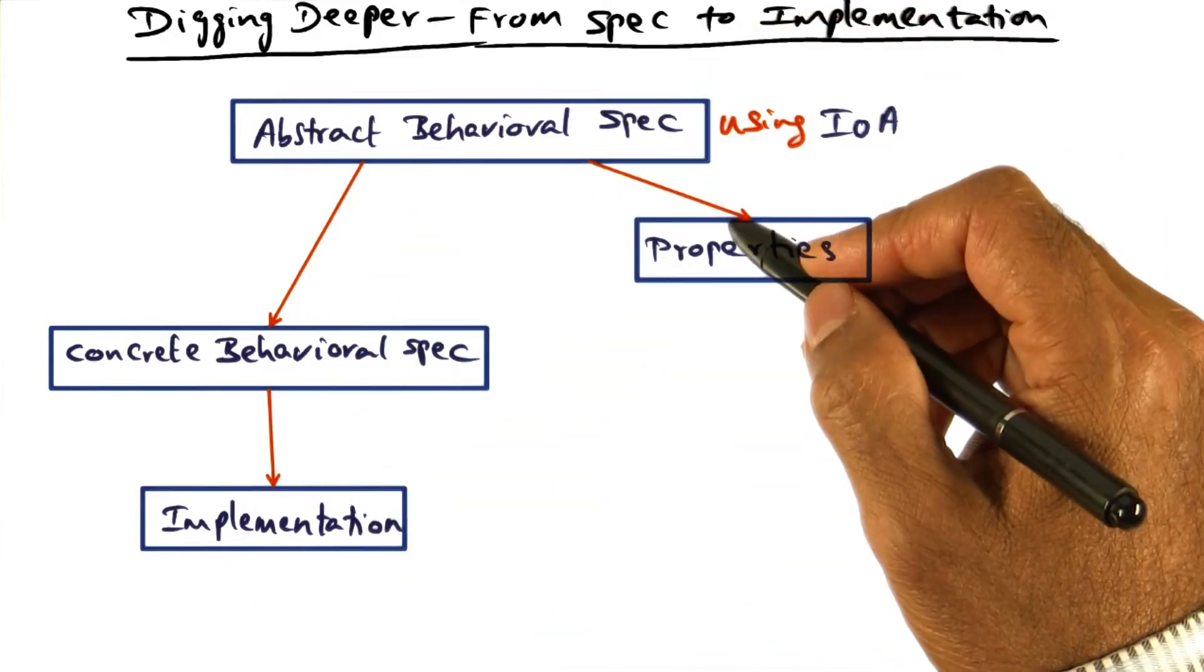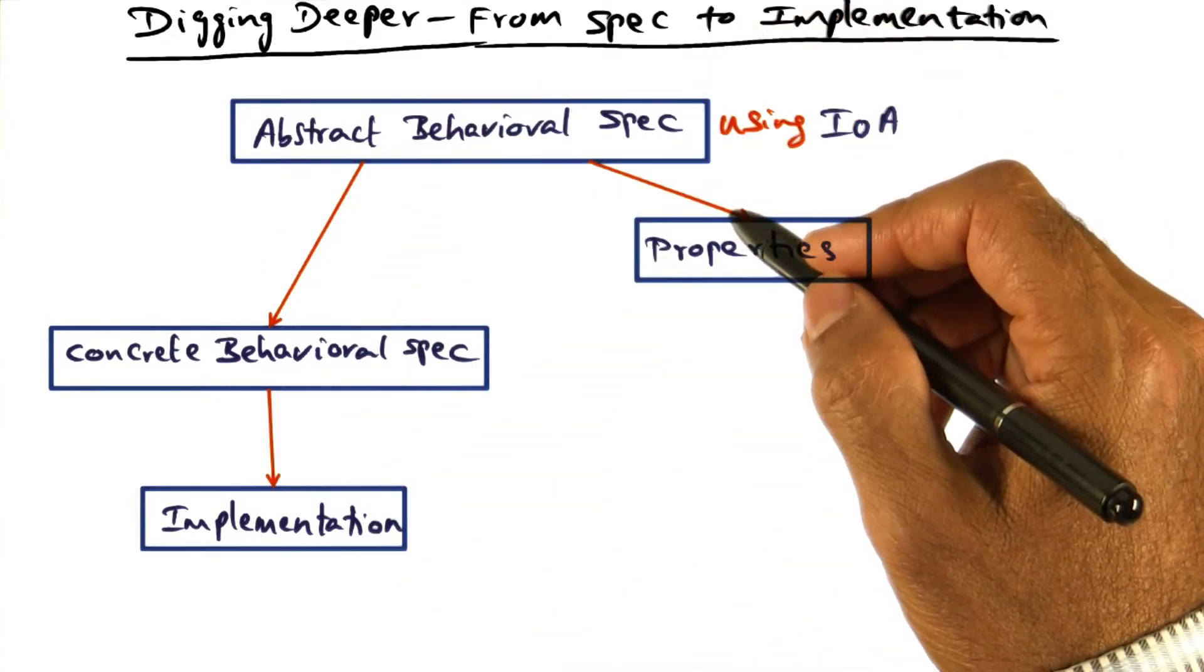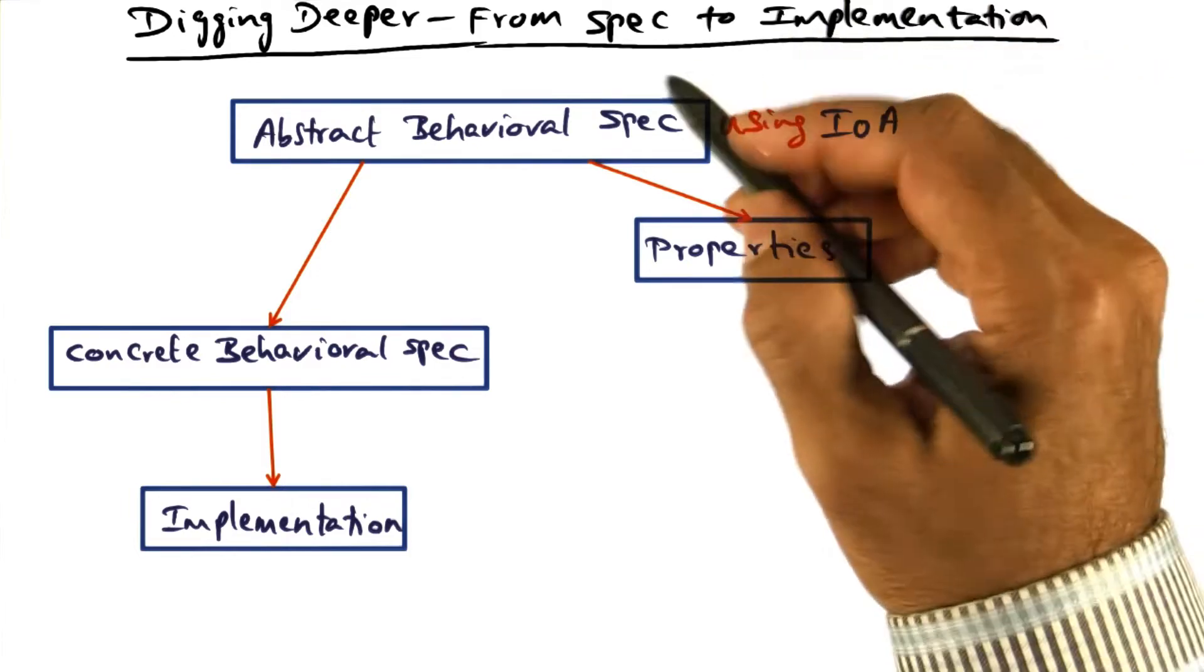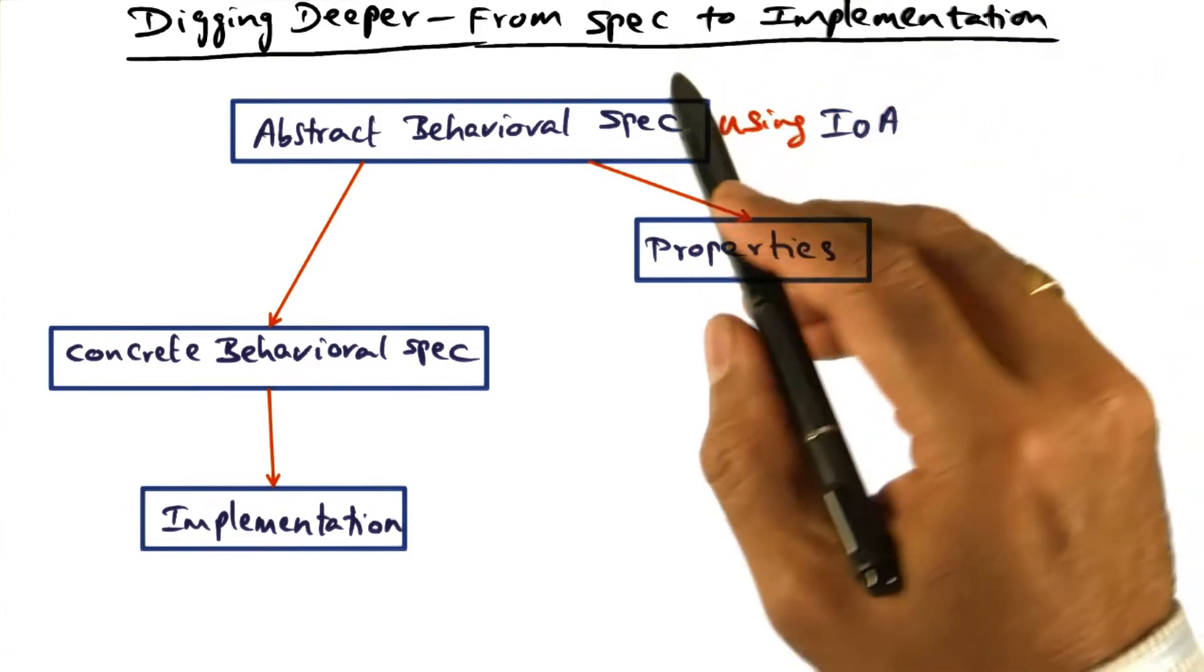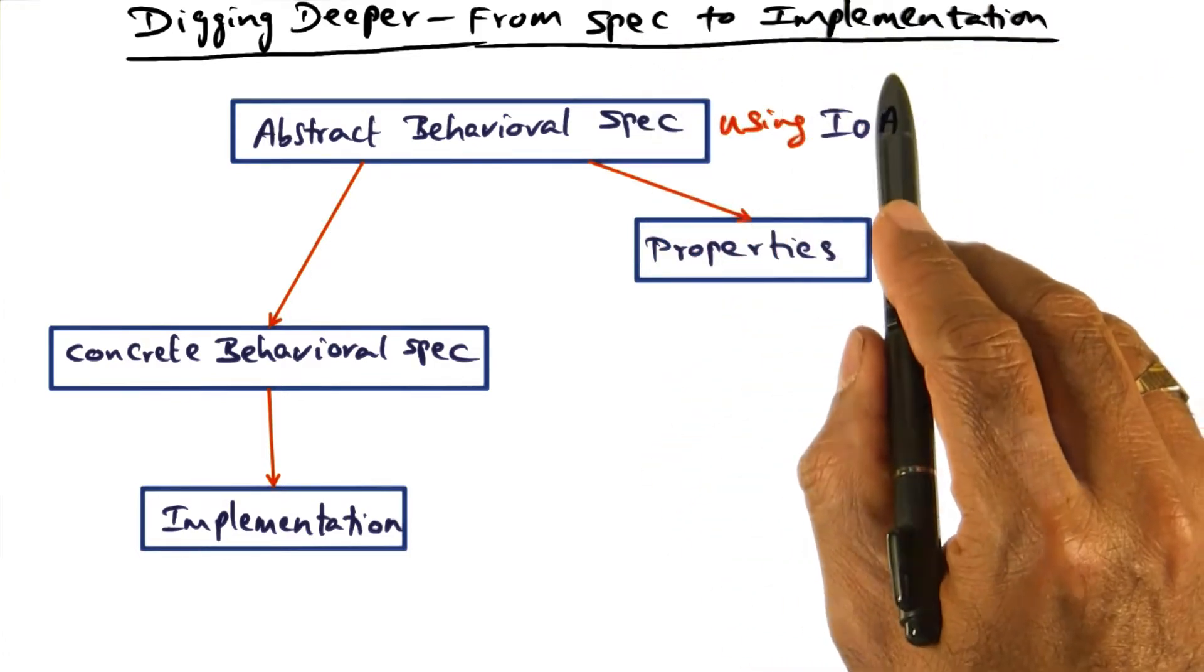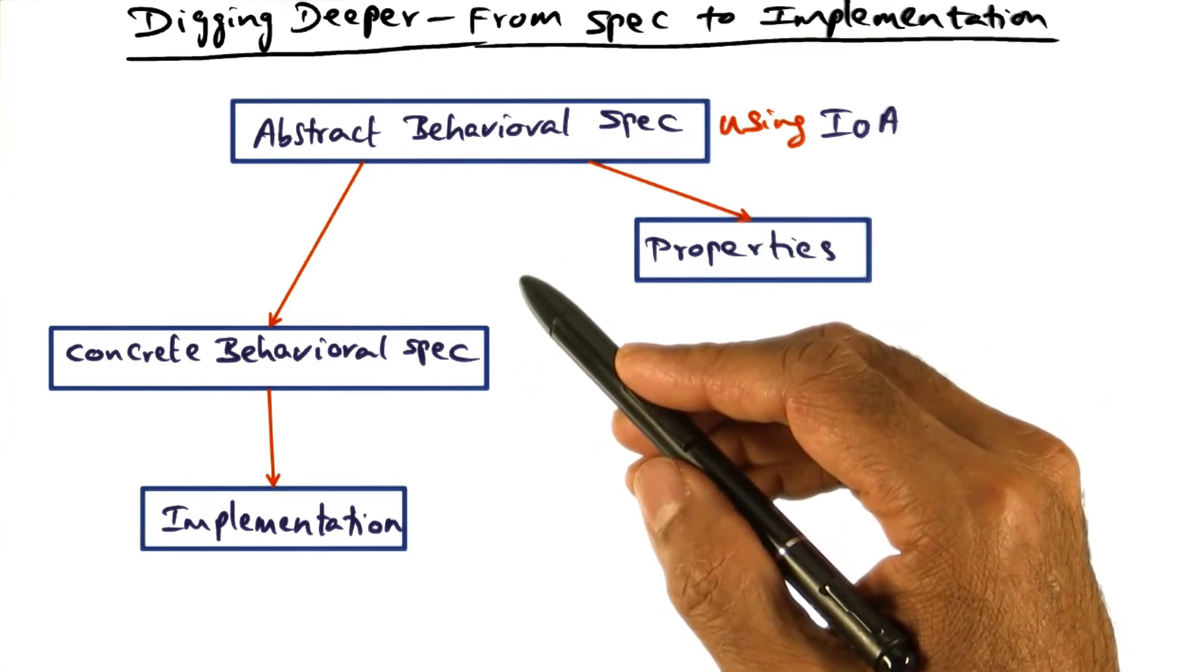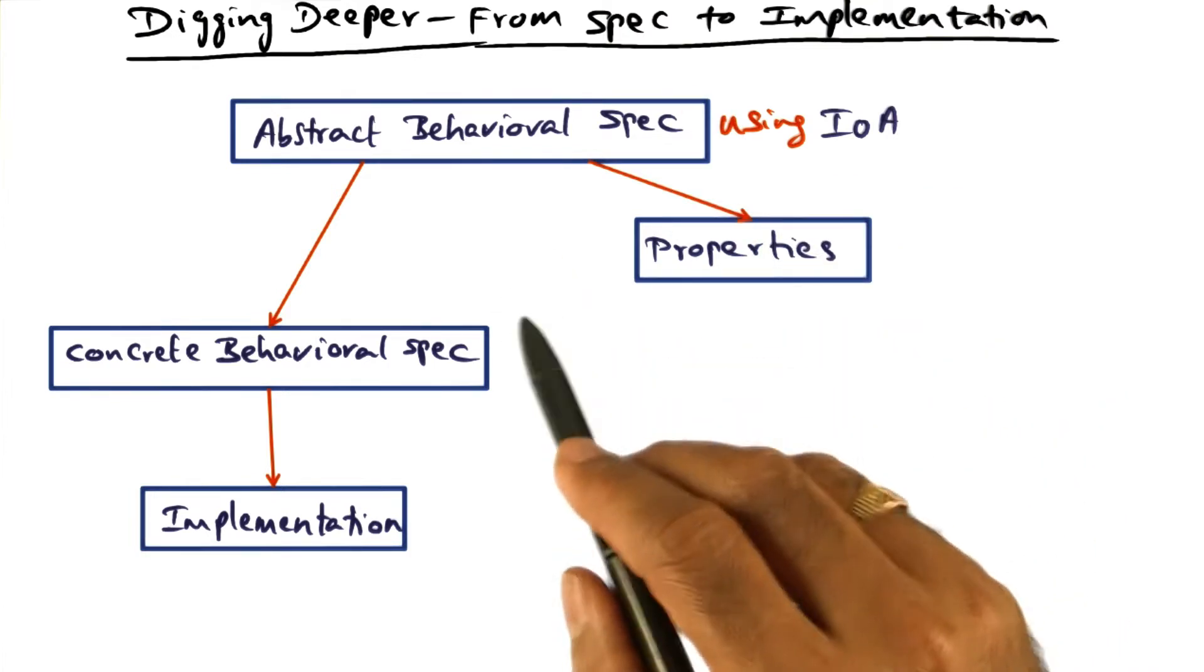What I'm showing you here is a software engineering roadmap to synthesizing a complex system. We're going to go from specification to implementation, and this figure shows the workflow in building a complex system.